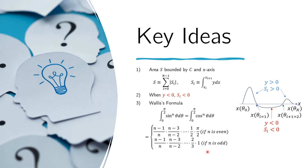If n is odd, then we place 1 here at the end, and the same procedure applies: start with n in the denominator, subtract 1 and put it in the numerator, subtract 1 and put it in the denominator, subtract 1 and put it in the numerator, and repeat until you reach 2/3. After 2, you subtract 1 and get 1 in the denominator. This makes Wallis formula easy to remember and will make the integration easier for us.